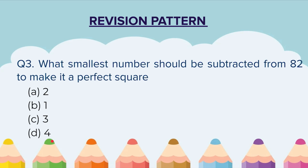Question 3: What smallest number should be subtracted from 82 to make it a perfect square?